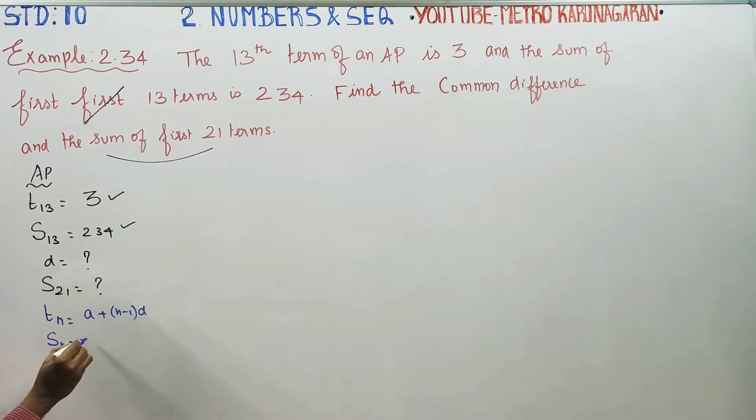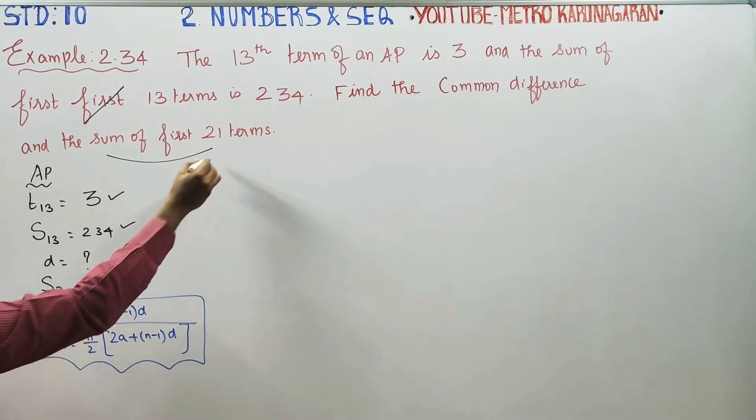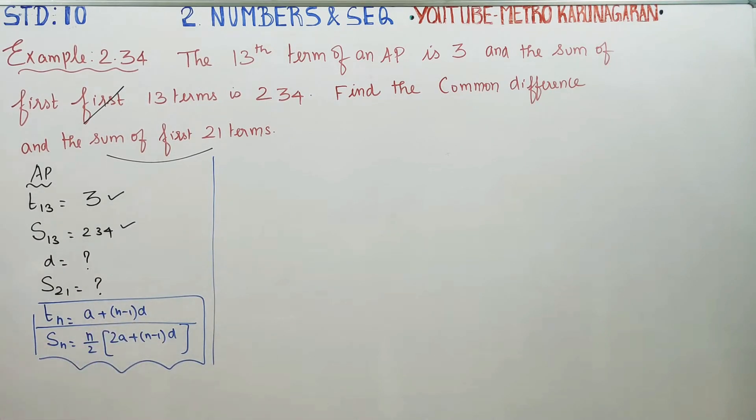The SN formula is: N by 2 times 2A plus N minus 1 into D. We will enter the first stage.